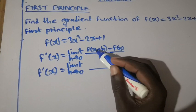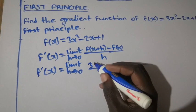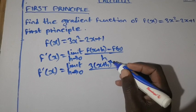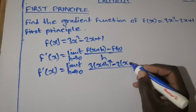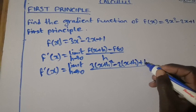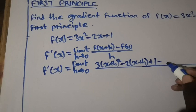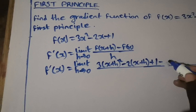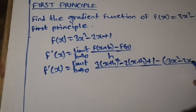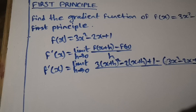In this function, wherever there is x we are going to replace it with x plus h. So f(x+h) will be 3(x+h)² - 2(x+h) + 1, minus f(x). And f(x) is 3x² - 2x + 1, all over h.